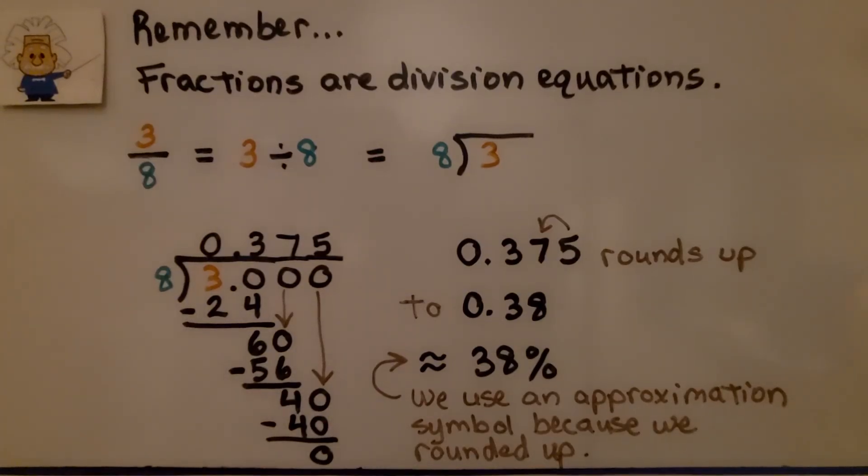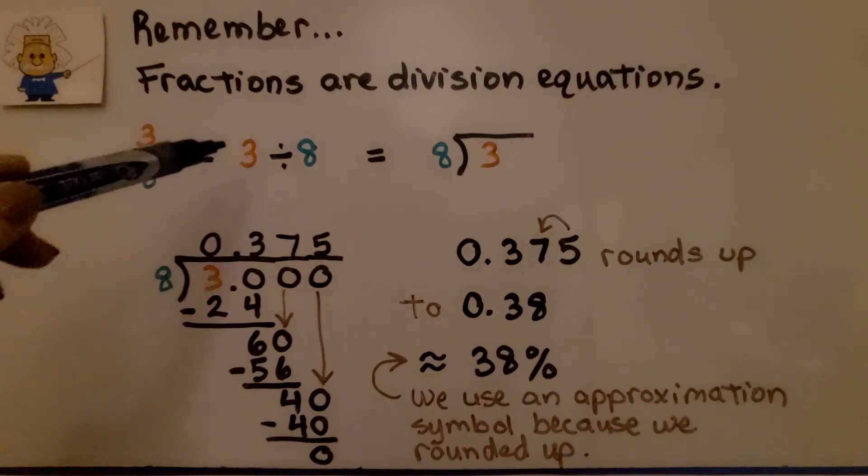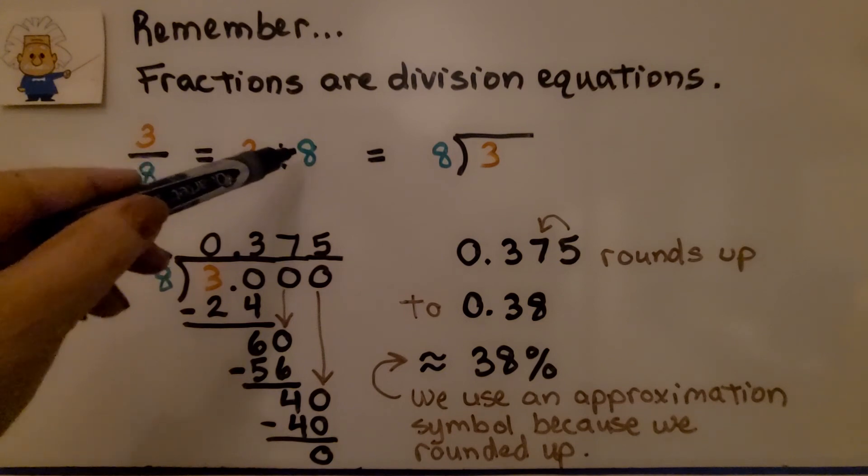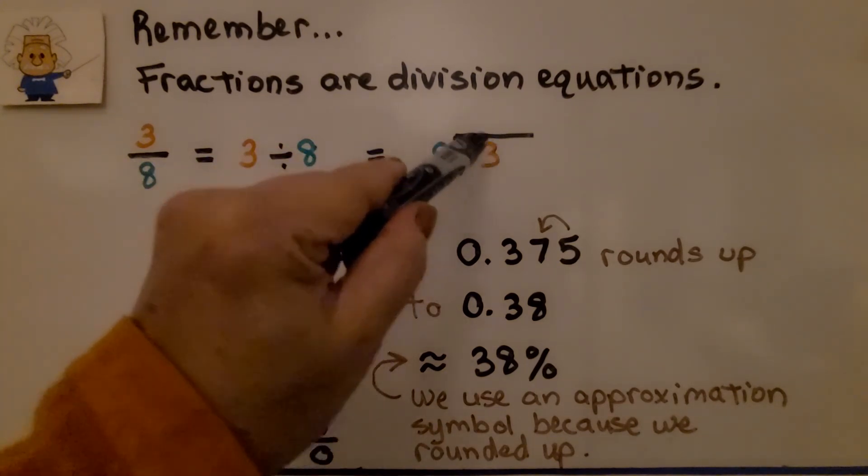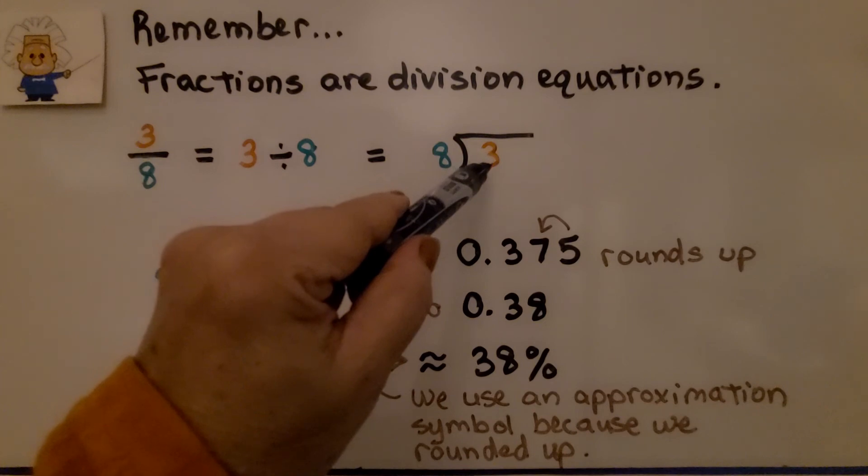Remember, fractions are division equations. Three-eighths is equal to 3 divided by 8. That's equal to 3 divided by 8. The numerator is on the inside. Notice that. The 8 is the divisor. The 3 is the dividend.